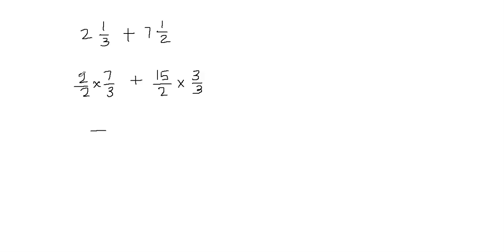Now I multiply numerator by numerator and denominator by denominator. So 2 times 7 gives me 14, and 2 times 3 gives me 6. Then for the second fraction, 2 times 3 gives me 6, and 15 times 3 gives me 45. Now you can see that I have the same denominator — 6 — on both sides. This is the shortcut to make the denominators equal.